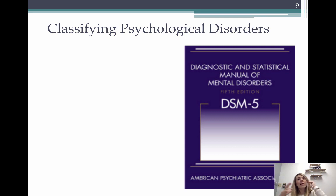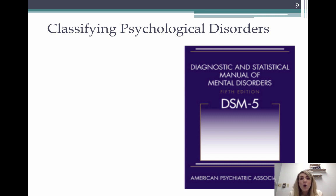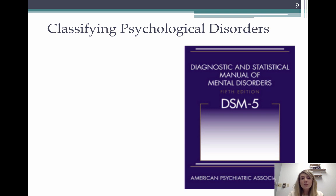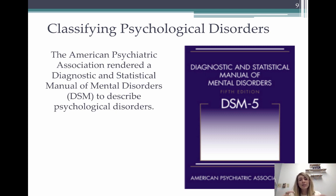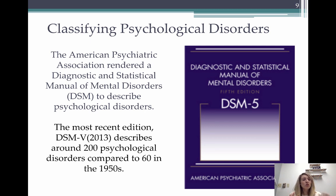We know a little about why disorders develop, but there's also the important piece of classifying them. How do I know if you have OCD, a phobia, schizophrenia, bipolar disorder, or depression? There is a book called the Diagnostic and Statistical Manual (DSM). Clinicians, therapists, psychologists, psychiatrists, medical doctors, and social workers use it to diagnose different disorders. It contains the name of the disorder, symptoms, how long symptoms should last, age groups, and what they look like. The most recent edition has about 200 disorders, compared to only about 60 in the 1950s.